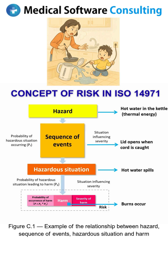So, in our kettle example, the hot water's thermal energy is the hazard. The cord being pulled and the lid opening, causing water to spill, is the hazardous situation. Touching the spilled hot water and getting burned is the harm. Risk, therefore, is assessed by evaluating both the probability of harm and the severity of the harm. That is the way ISO 14971 frames the concept of risk.